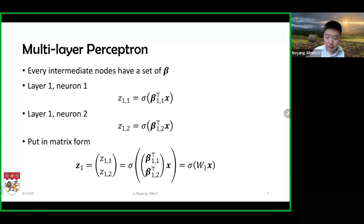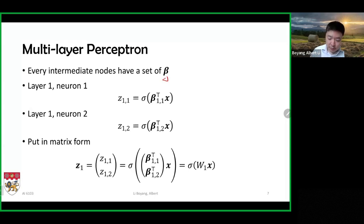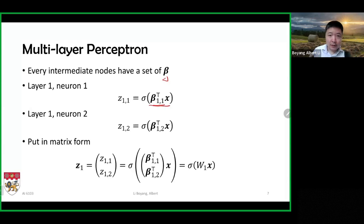Because we have many units, we introduce subscripts to tell them apart. For the first neuron in the first layer, we use subscript 1,1 — so beta_{1,1} is the weight parameter of the first logistic unit in the first layer. It multiplies with input vector x via a dot product, and the result goes through an activation function, which could be a sigmoid or other types. The output of this unit is called z_{1,1}.